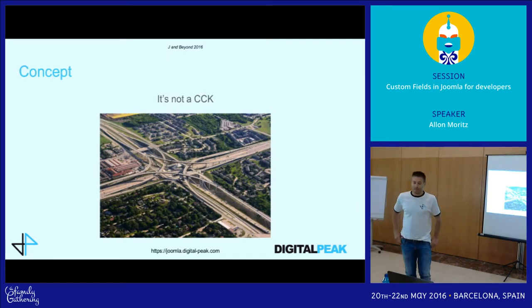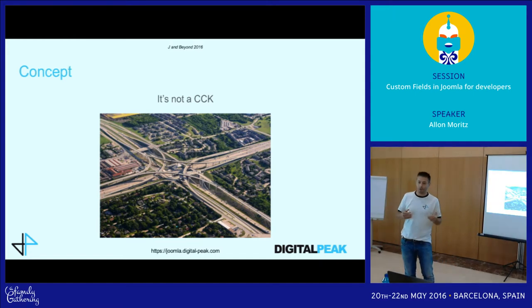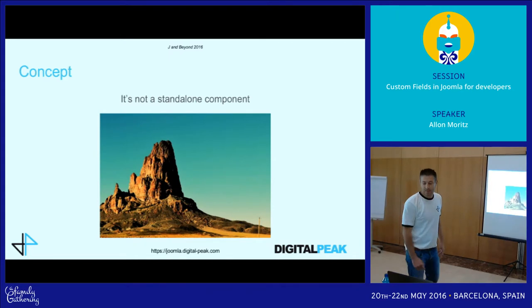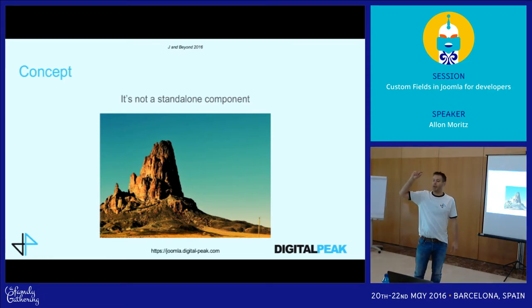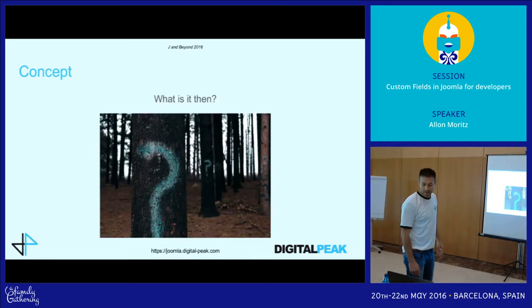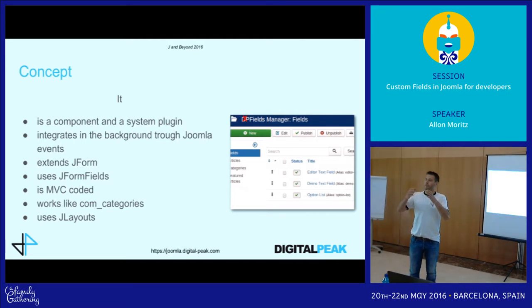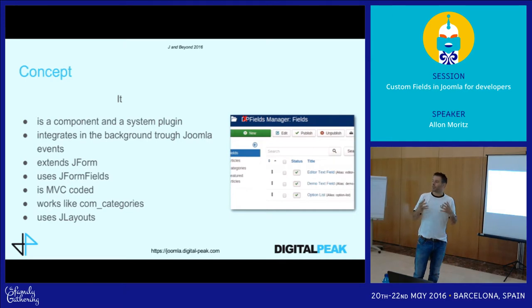The concept of com_fields: what it is not. It's not a CCK — it's not where you can define custom content types with drag and drop like you have with existing CCKs. It's also not a standalone component. When you install DP Fields, there's no new menu entry in the backend under the component menu. It's meant to be integrated like com_categories — you don't have a single menu item for com_categories either; you have one under articles, one under extensions, but no standalone entry.